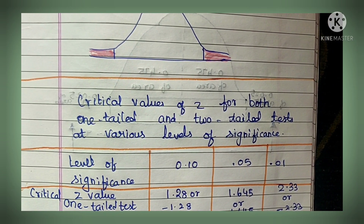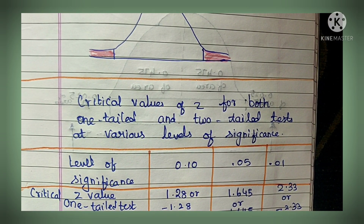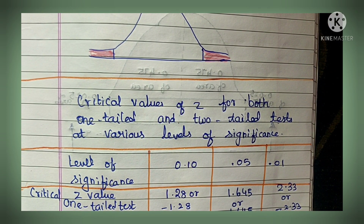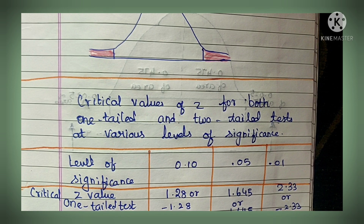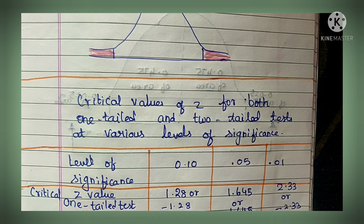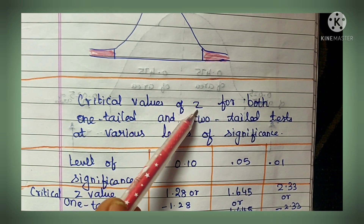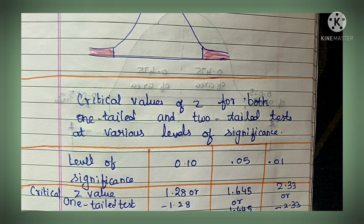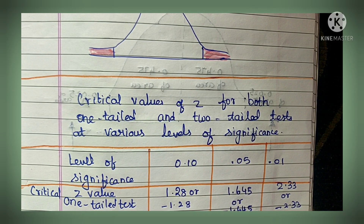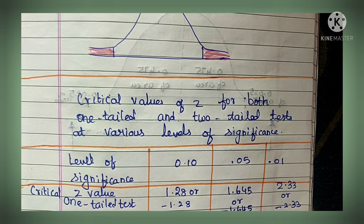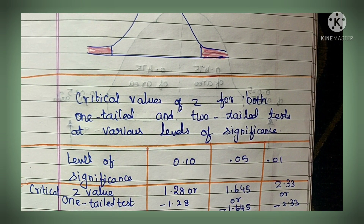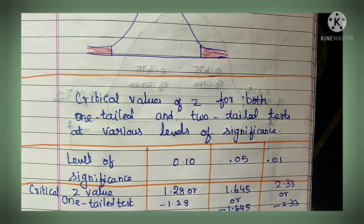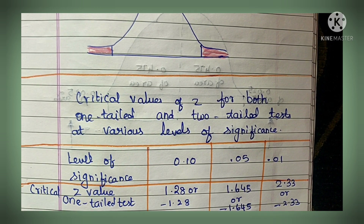Z values follow the normal distribution. You have standard table values for z-test, t-test, F-test, ANOVA, chi-square, and all. You can search in Google images or in any statistics book - they provide all these distribution tables: Z table or normal distribution table, T table, chi-square table, and so on.